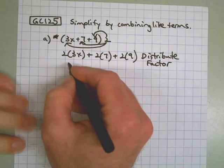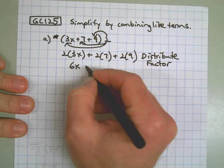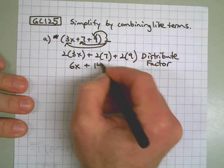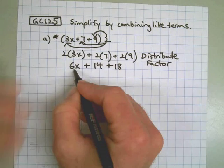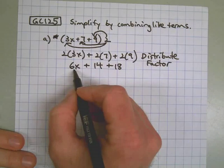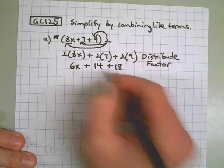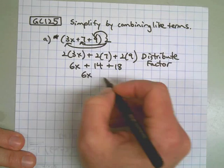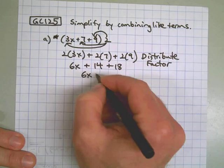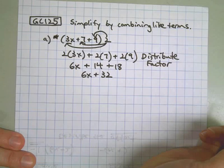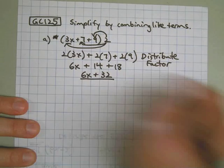We're going to simplify these terms by multiplying. Now we have 6x, and we have 14 and 18. The 6x I cannot put together with these — this is a variable term, while these are integers. So I'm going to keep the 6x alone, but I can definitely put together the 14 and the 18, which is 32. And that's the answer right there — that is simplified.